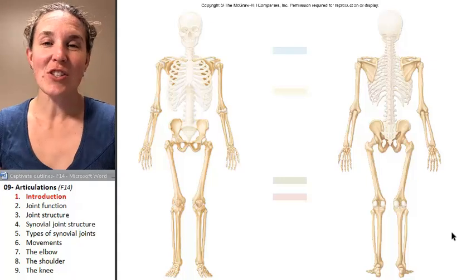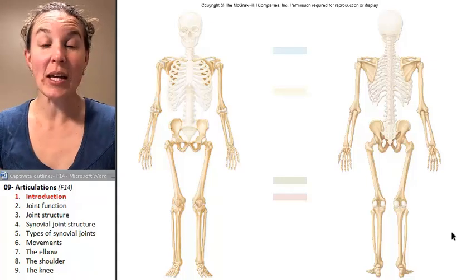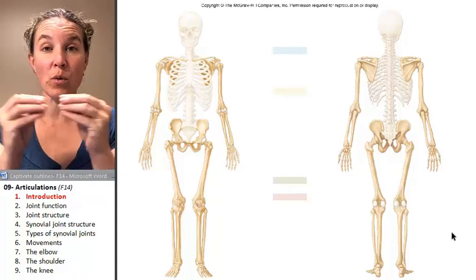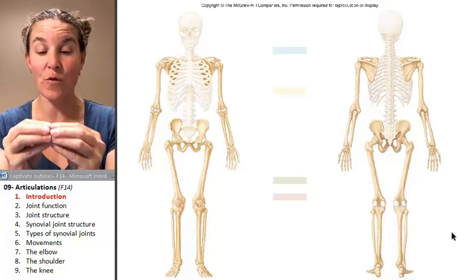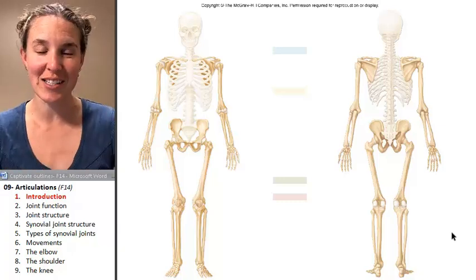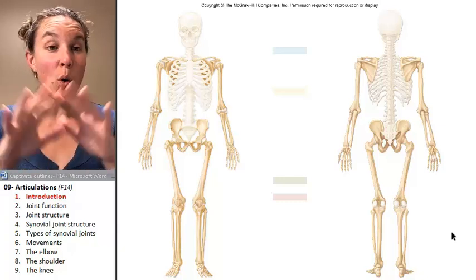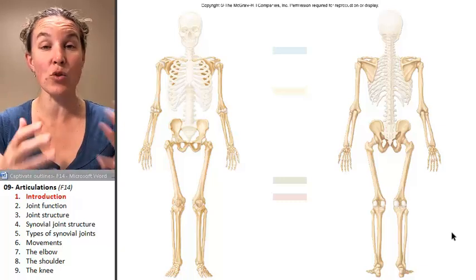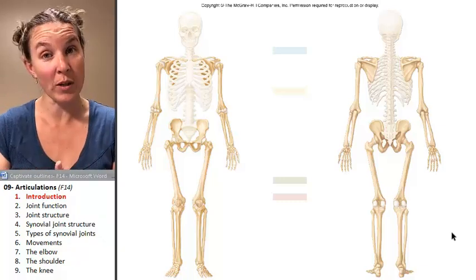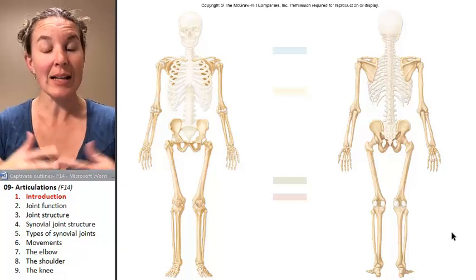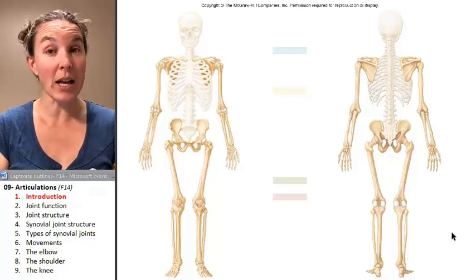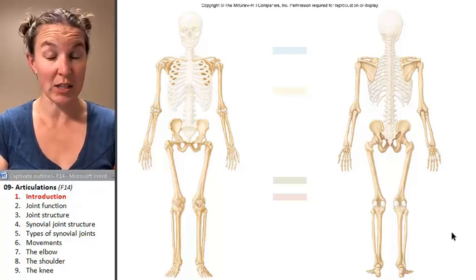Hey everybody. So today we are going to talk about places where bone organs connect together to form an articulation or a joint. The whole lecture is describing the structures of different types of joints, classifying them based on structure, and also classifying them based on function.